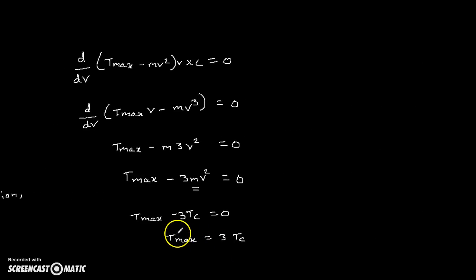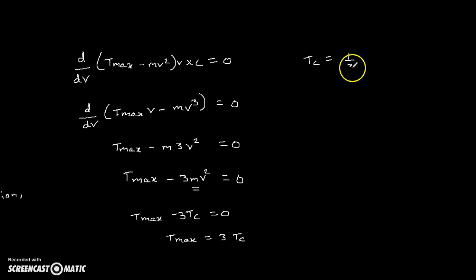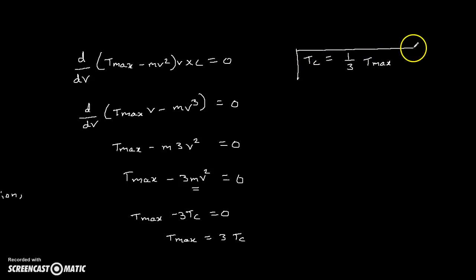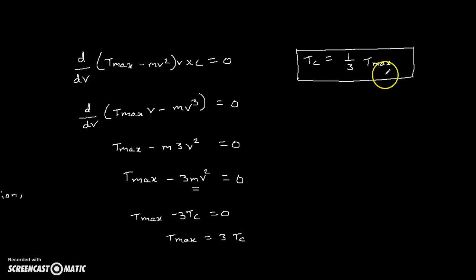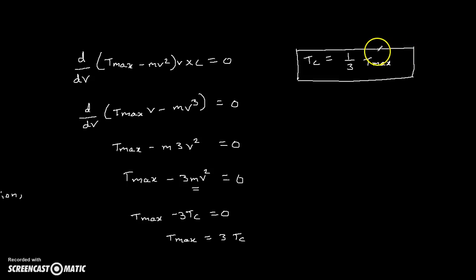The condition for maximum power transmission is T_max = 3Tc, or equivalently Tc = T_max / 3. This means the belt absorbs one-third of the maximum tension as centrifugal tension. So one-third of T_max is taken as the centrifugal tension in the belt — that is the condition for maximum power transmission through the belt drive.